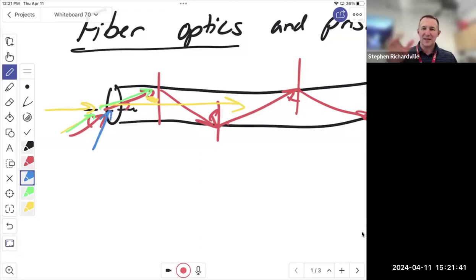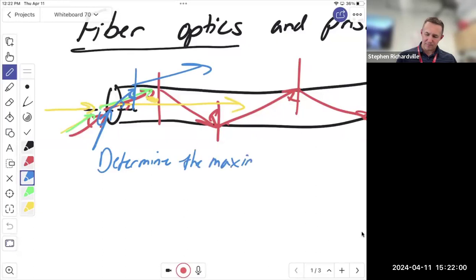See, light always bends into the material. If I get out here at blue, though, and it bends closer to the normal, that's okay. But what if this angle is too small up here? If that angle is too small, the light's gone. So the question is, determine the maximum angle that light can enter.